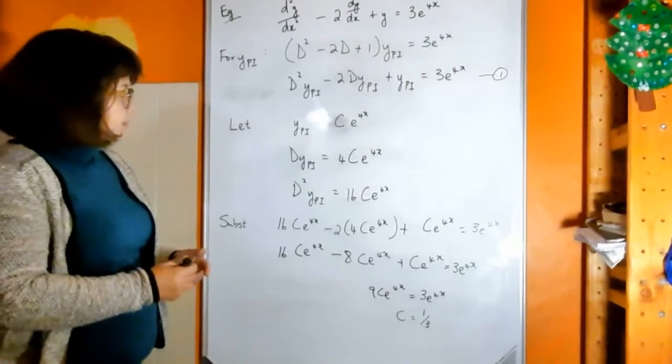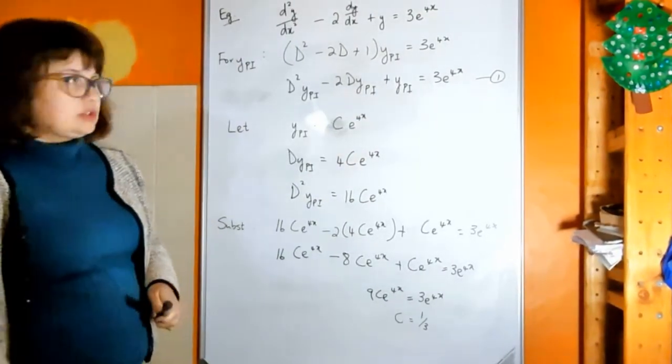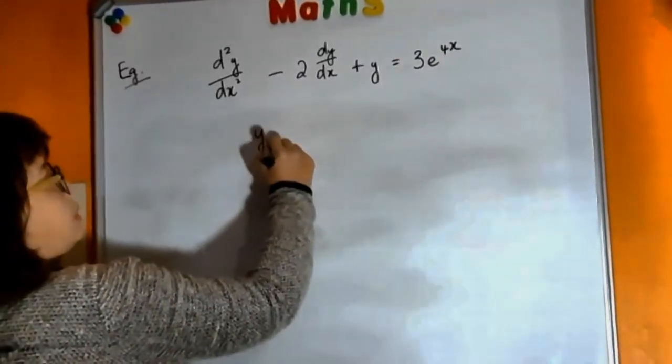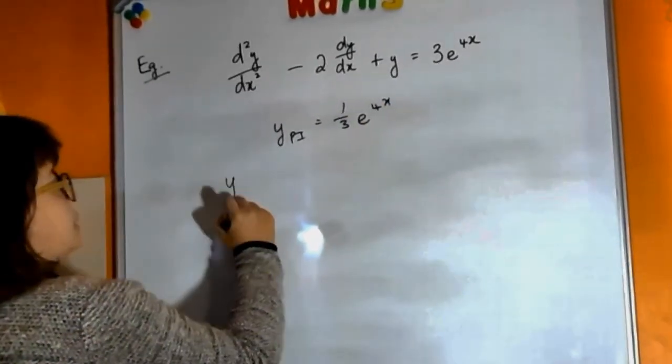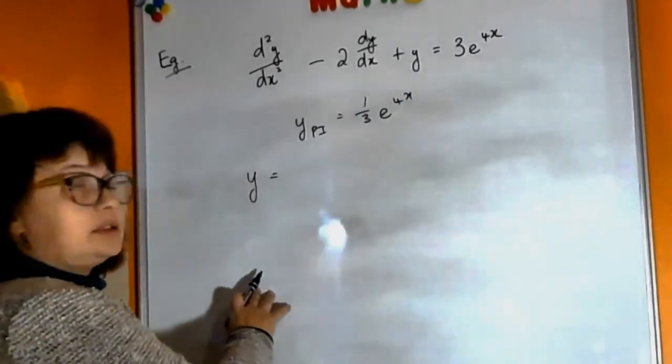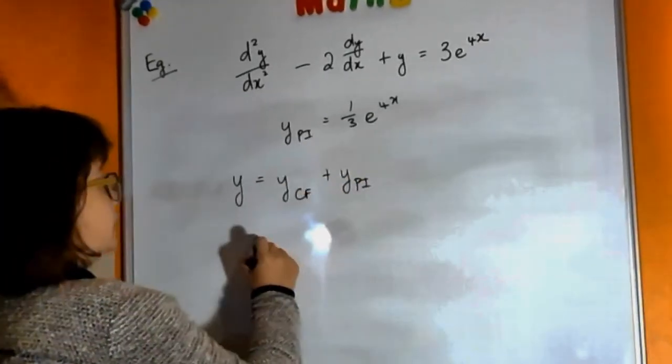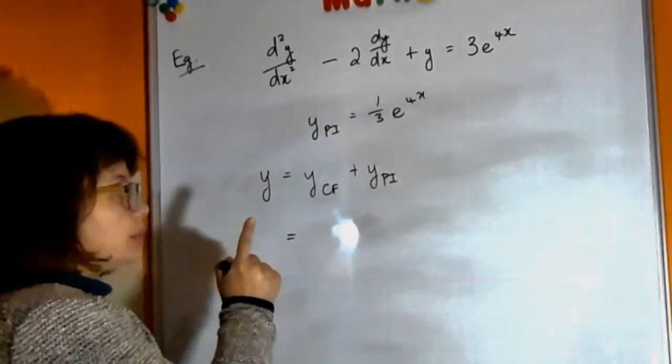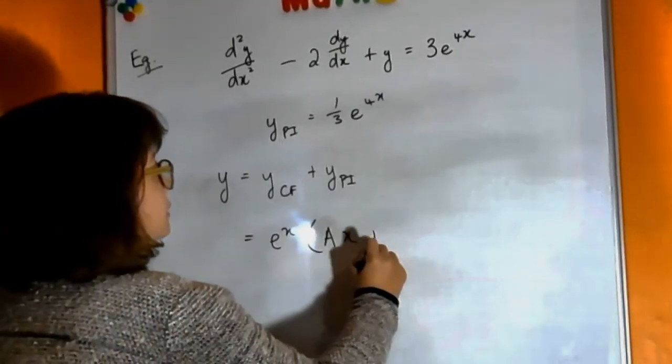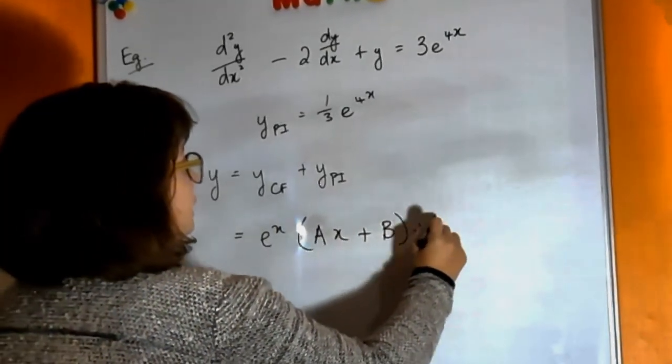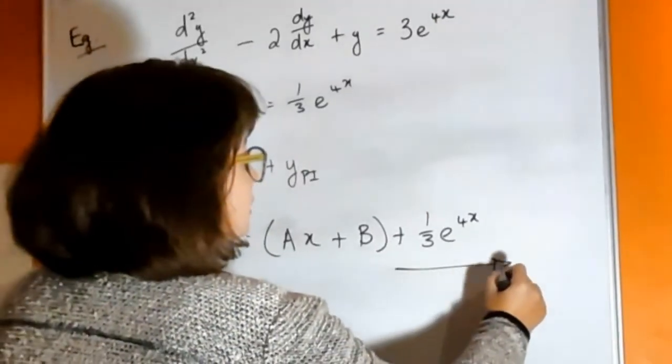Right, so that means that your particular integral is going to be a third e to the 4x. So our particular integral is a third e to the 4x, that means that your y, your final solution, is made up of complementary function plus your particular integral. Your complementary function was, we remember we had repeated roots, so it's e to the x times (ax plus b) plus a third e to the 4x, and that is the general solution of your differential equation.